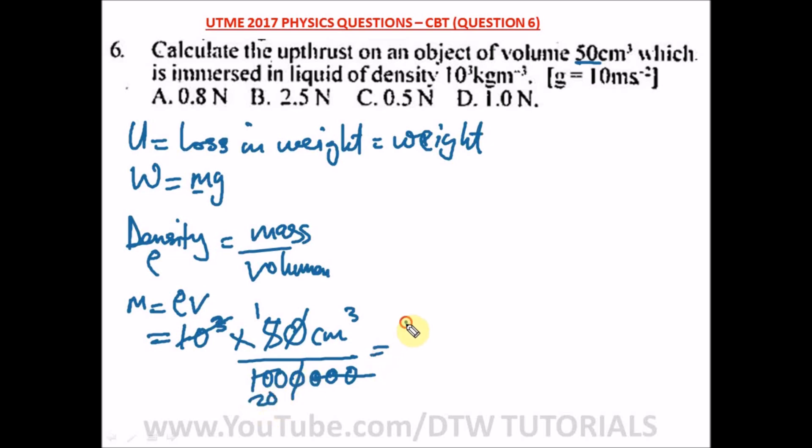Let's put our mass value into our formula to get upthrust. W = mg, which is 1/20 times g. We're given g as 10 m/s², and we cancel out. So we have 1/2, and 1/2 is 0.5 newtons. Our right option here is option C.